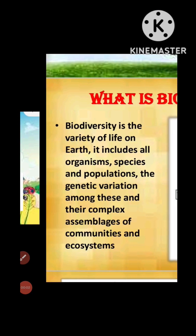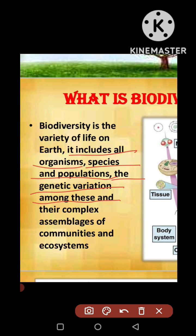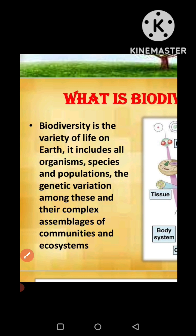What is biodiversity? If we define biodiversity, we can define it as the variety of life on earth. It includes all the organisms, species and populations, the genetic variation among these, and their complex assemblage of communities and ecosystems.